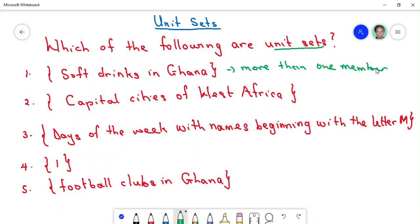So it cannot be a unit set. Let's look at the second one, which is: capital cities of West Africa.